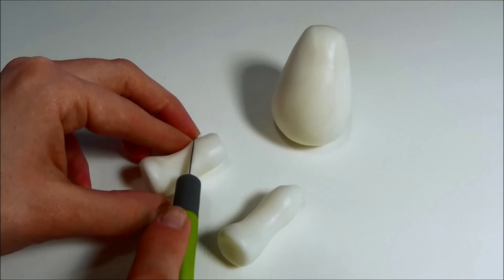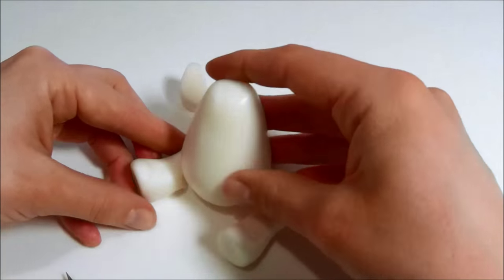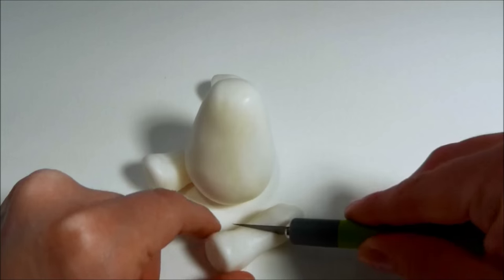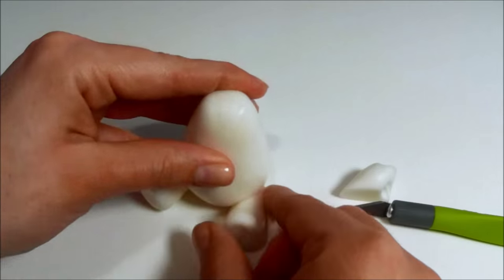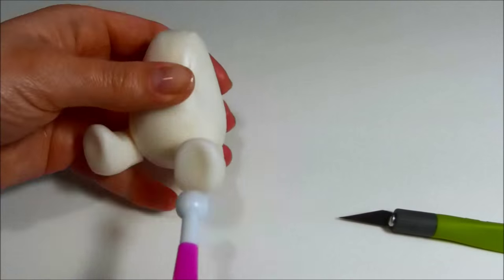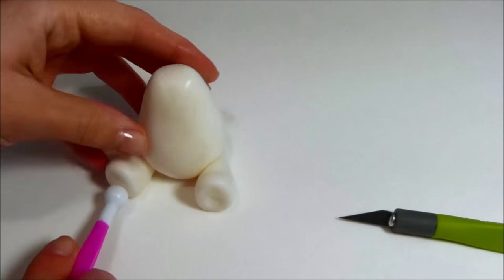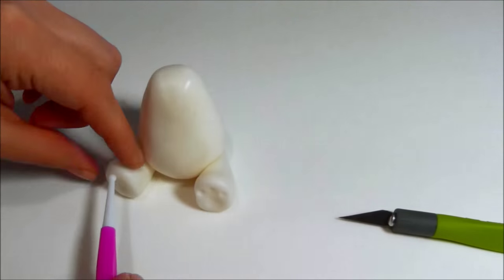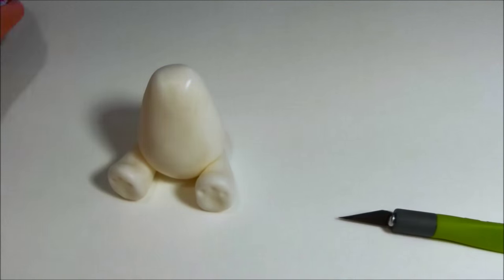Cut off the ends of the legs at an angle and stick them to the body. Use a ball tool to mark spots on each foot and fill them out with grey fondant balls.